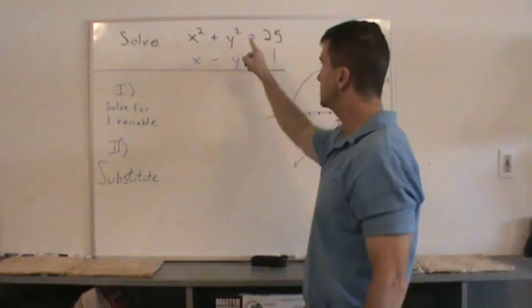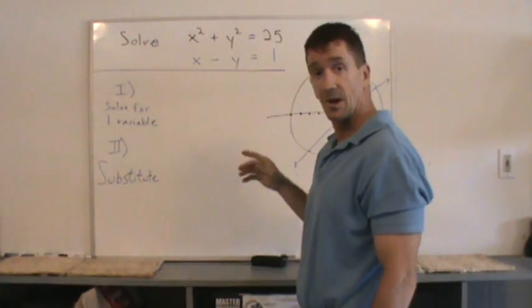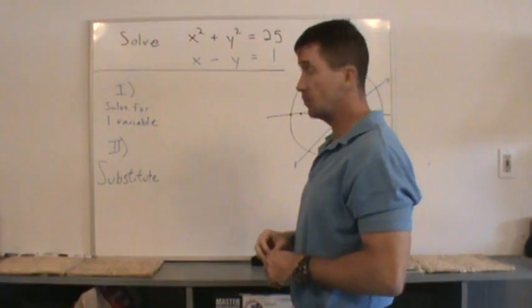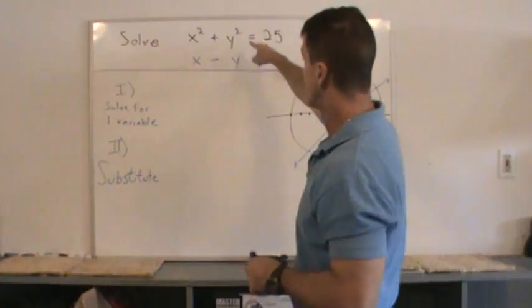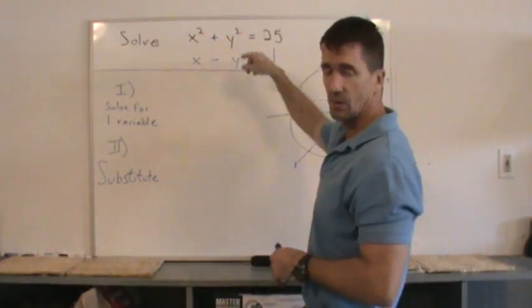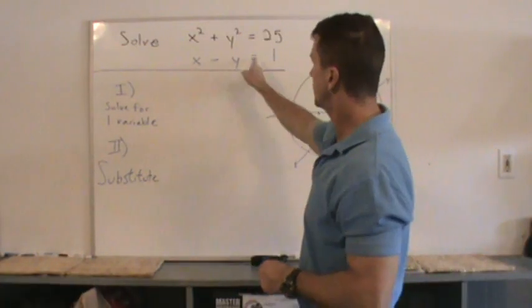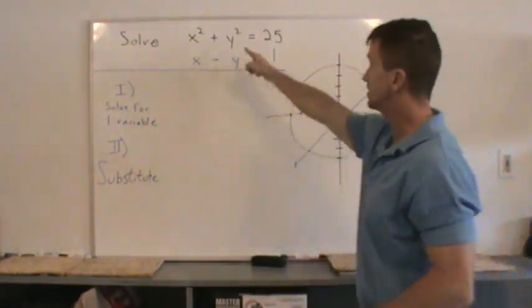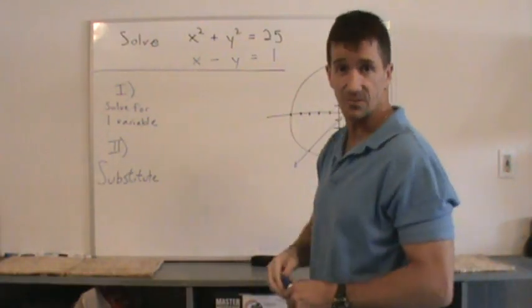In this video, we're going to solve a system of equations by the substitution method. We cannot use the elimination method in this example because we don't have a system of linear equations. This x minus y equals 1 is linear, but this x squared plus y squared equal to 25 is a circle.